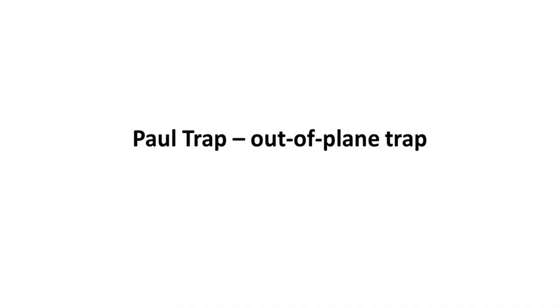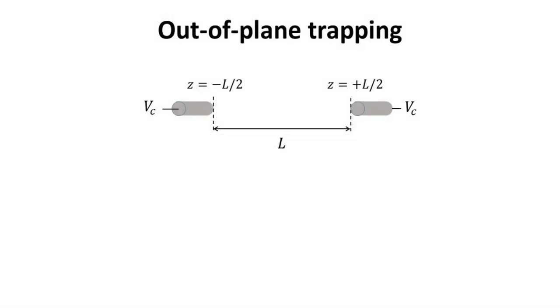Part 6: Paul trap, out of plane trapping. Now, the next step is to trap the ions in the Z direction. In the Paul trap setup, we place two caps with surface potential VC, separated by a distance L. The potential created by these two caps is a harmonic potential along the Z direction, that is, proportional to Z squared. Here, alpha is a dimensionless parameter.